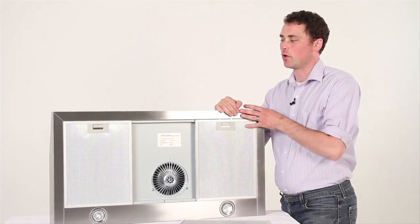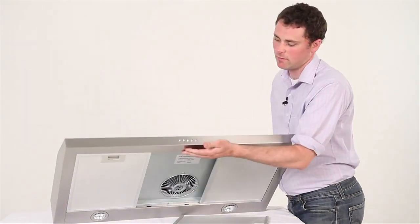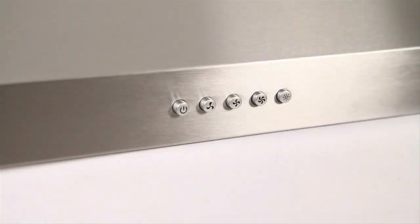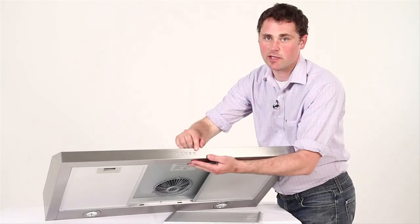And it's all controlled right here from this five-button soft-touch control. Power on and off, low, medium, and high settings for the blower, and then the lights on and off. All right there, really easy to use.